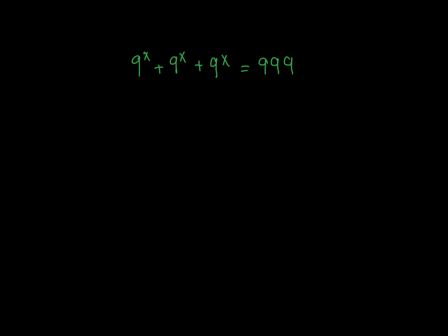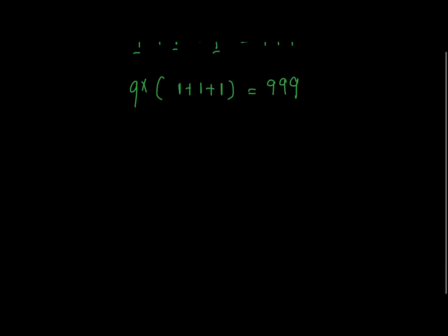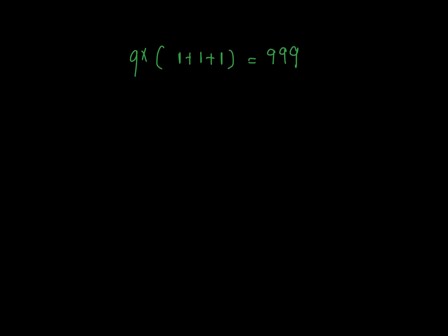Hello guys, welcome back again. Today we have this equation and we're going to try to solve it. The first thing you must do is take out a common factor of 9 to the power x, because we have 9 and 9 and 9 here, so we have 1 plus 1 plus 1. This gives us 9 to the power x multiplied by 3.